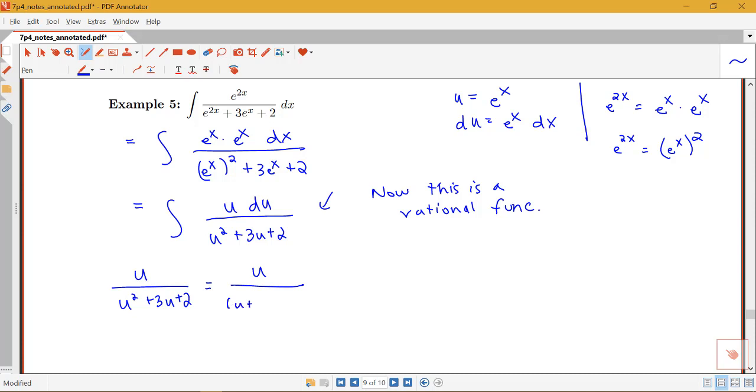So that's going to factor into u plus 1 and u plus 2, so I'm going to have nice simple linear factors. So I know that this form would be a over u plus 1 plus b over u plus 2. So I can clear those fractions and have u is equal to a times u plus 2 plus b times u plus 1.